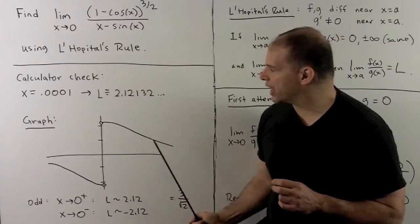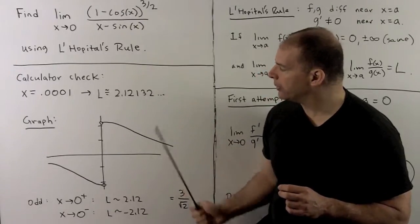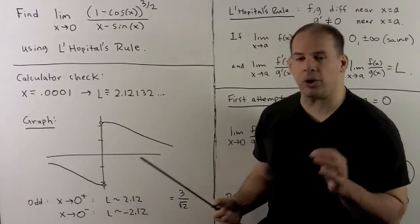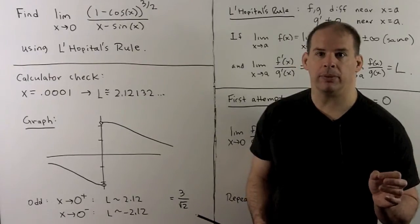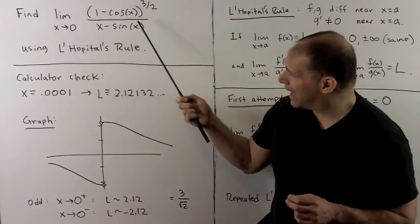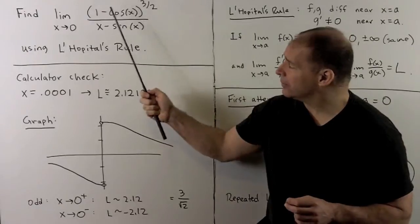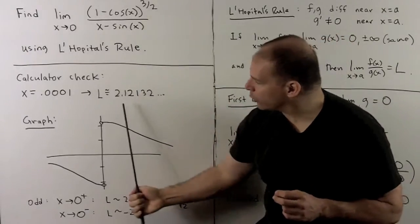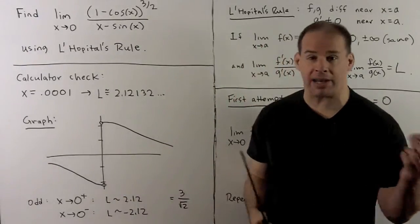As I come in from the right, this is going to settle on our 2.12. As I come in from the left, it'll go to minus 2.12, and that's accounted for by the fact that this function's odd. So if I get the limit from the right, we're going to get the limit from the left with a minus sign.